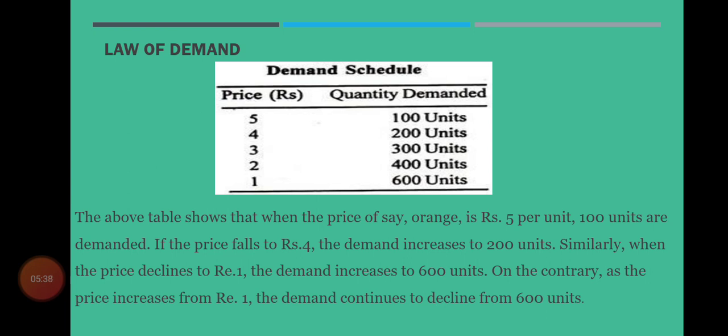Price 4 سے کم ہو کر 3، اور 3 سے کم ہو کر 2 ہو جائے تو ہم دیکھتے ہیں کہ quantity demanded مسلسل بڑھ رہی ہے — 200 سے بڑھ کر 300، پھر 400۔ اس طرح price میں مسلسل کمی ہو رہی ہے۔